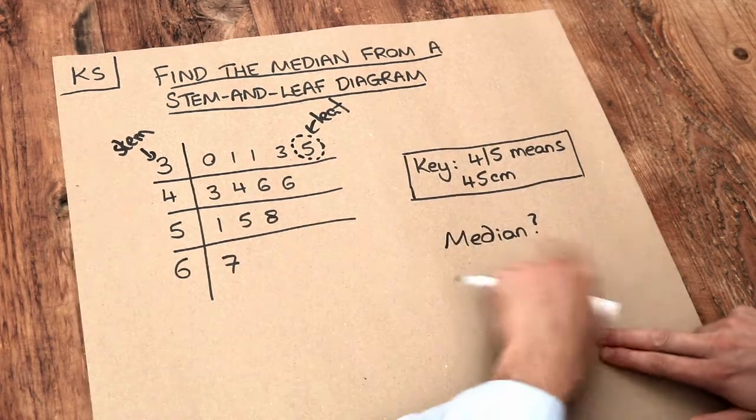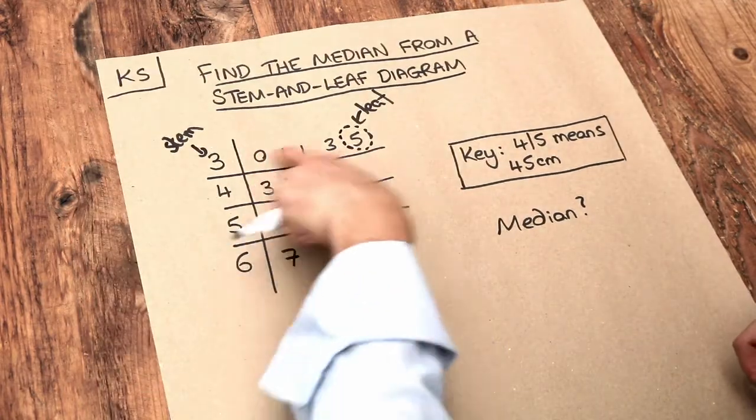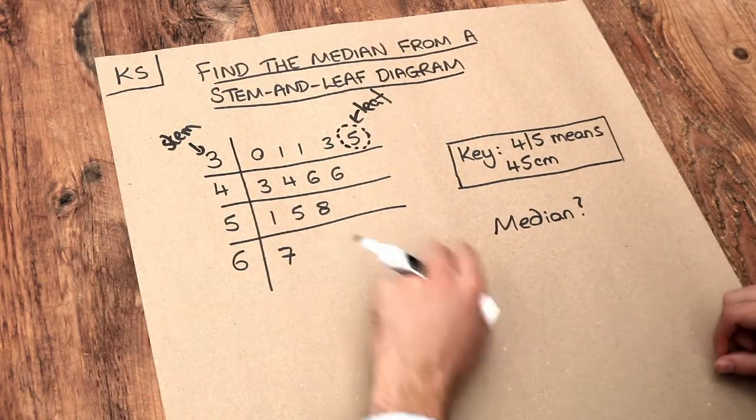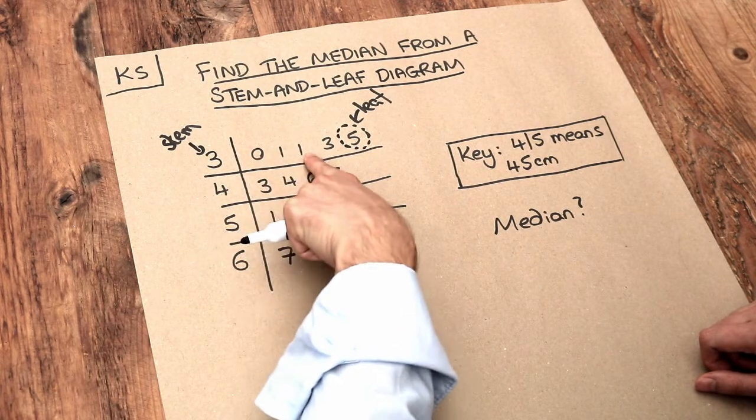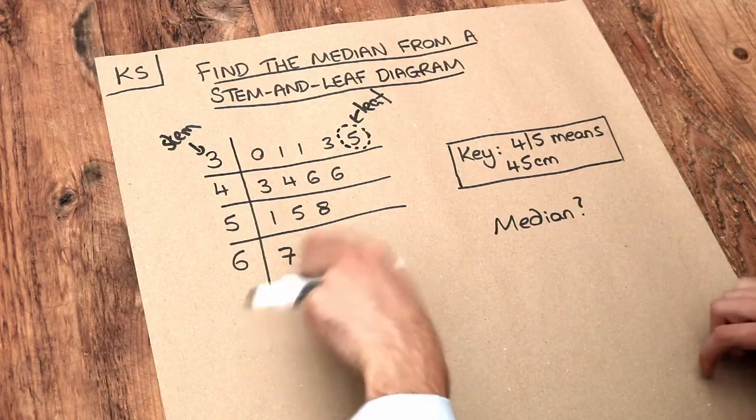Now we want the median. Let's first count how many values we have. So each of these on the right represents a value. We've got 1, 2, 3, 4, 5, 6, 7, 8, 9, 10, 11, 12, 13 values.